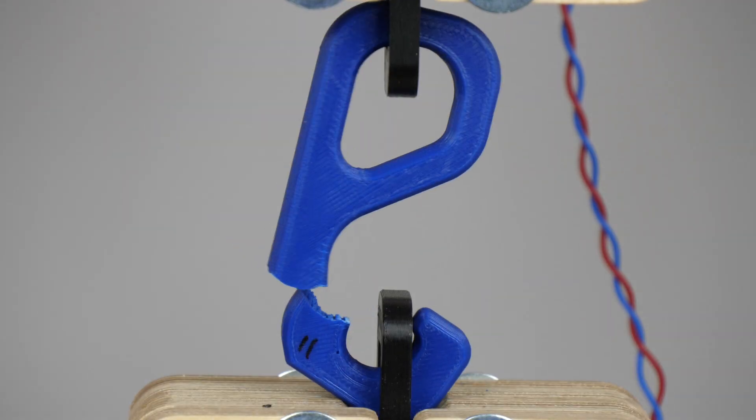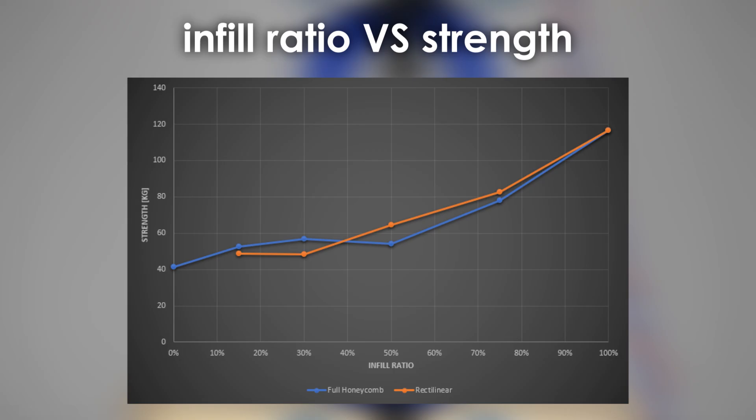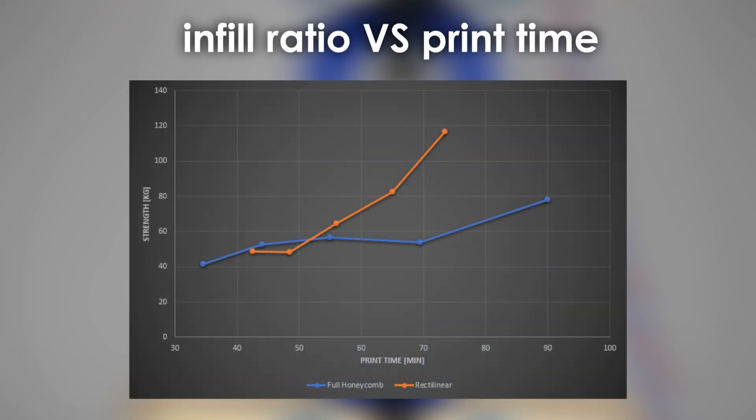Even though it seemed with the first tests that the honeycomb pattern was significantly stronger than the standard infill, taking a look at all the values between 15 and 75% they are pretty much the same. The interesting part again is if we take a look at the print time where the rectilinear pattern starts to shine. At smaller infill ratios both infills give you around the same strength in the same amount of print time. But as soon as you go over 50% the rectilinear prints way faster than a honeycomb at the same strength.